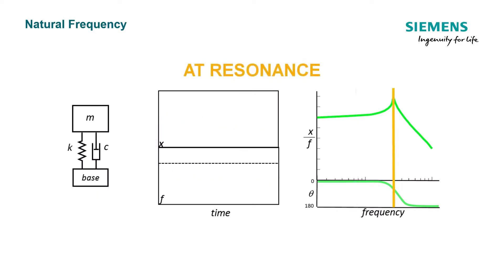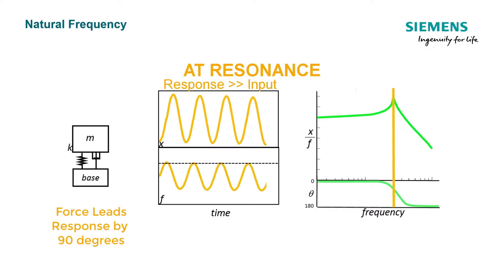At the resonant frequency, we have a phase change. And now the mass and the base are 90 degrees out of phase. The response is much greater than the input, and we get that highest amplitude right there on the natural frequency.